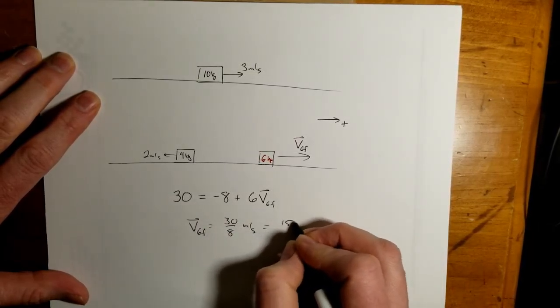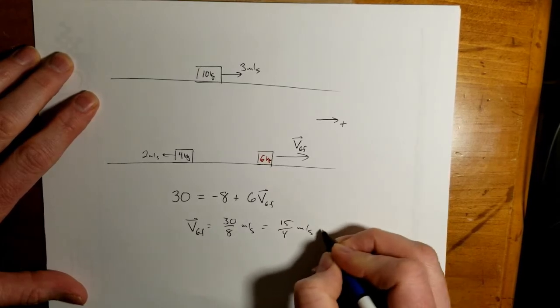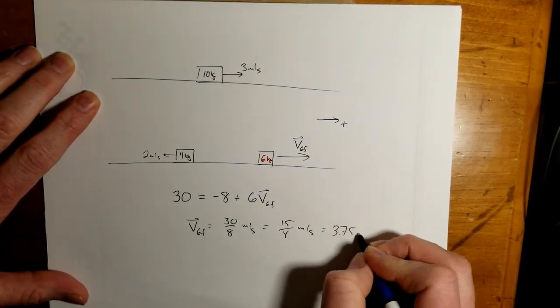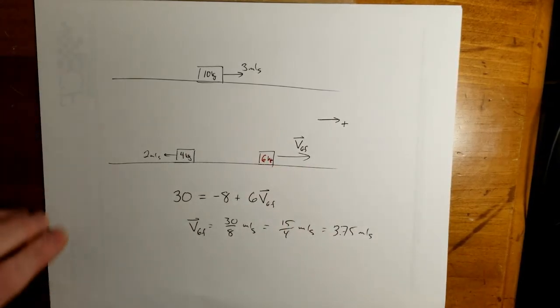And so we end up with V6F is equal to 38 over 6, or 15 fourths meters per second, or 3.75 meters per second. It is positive because it's going to the right.